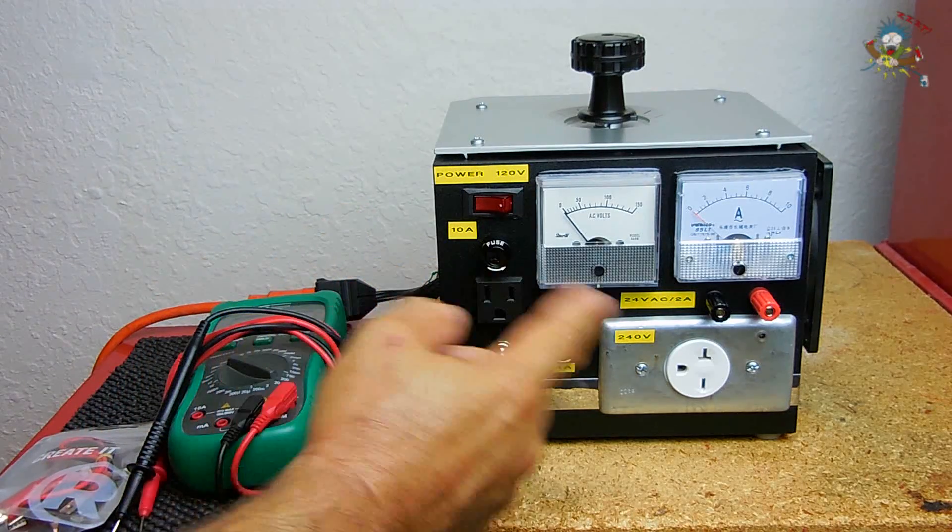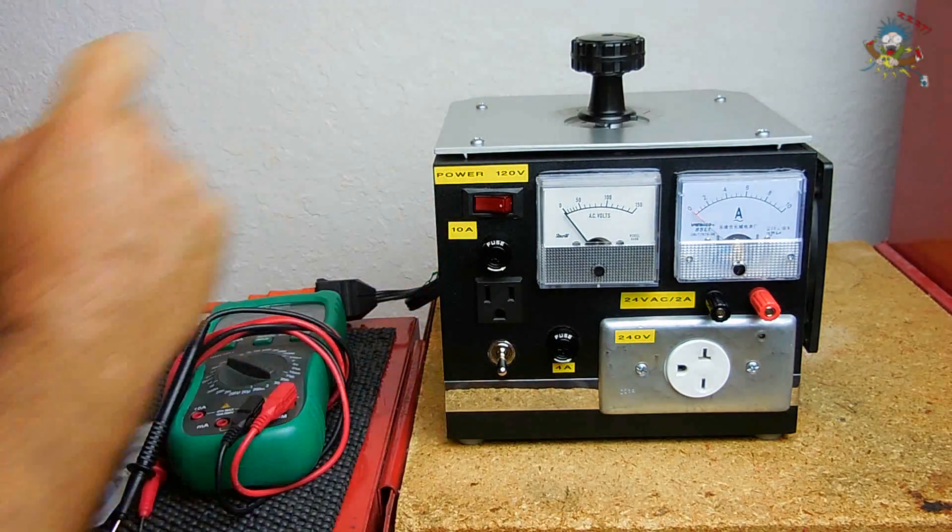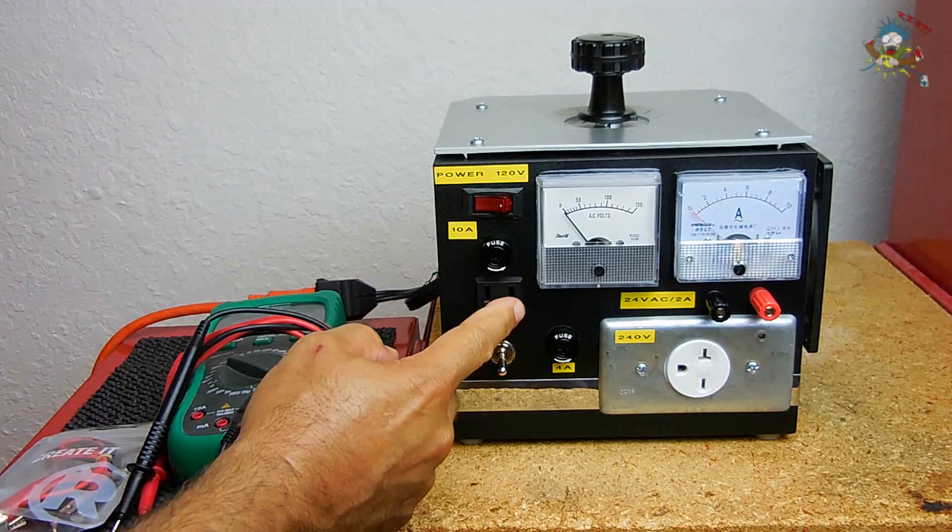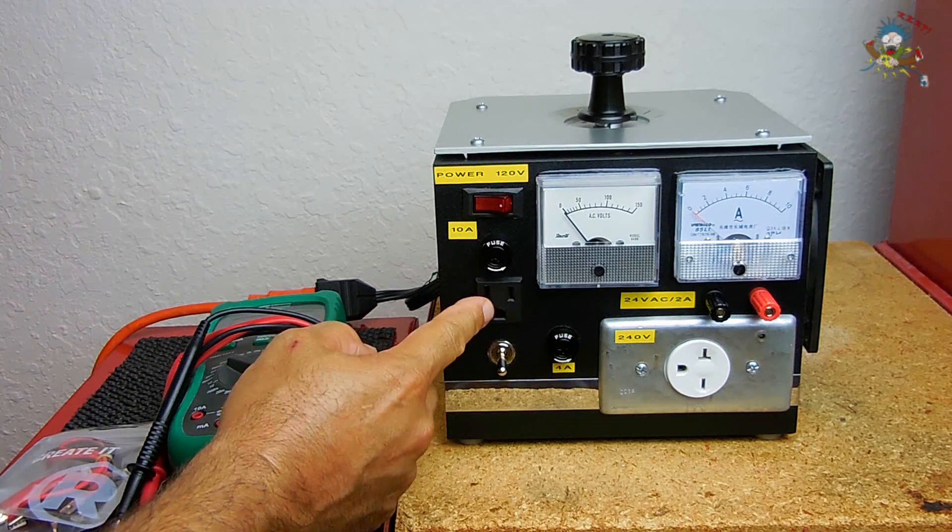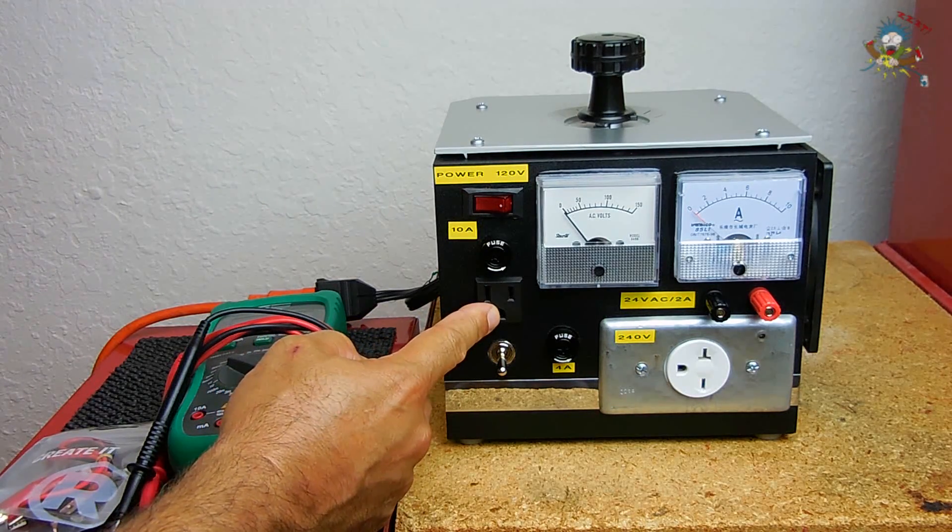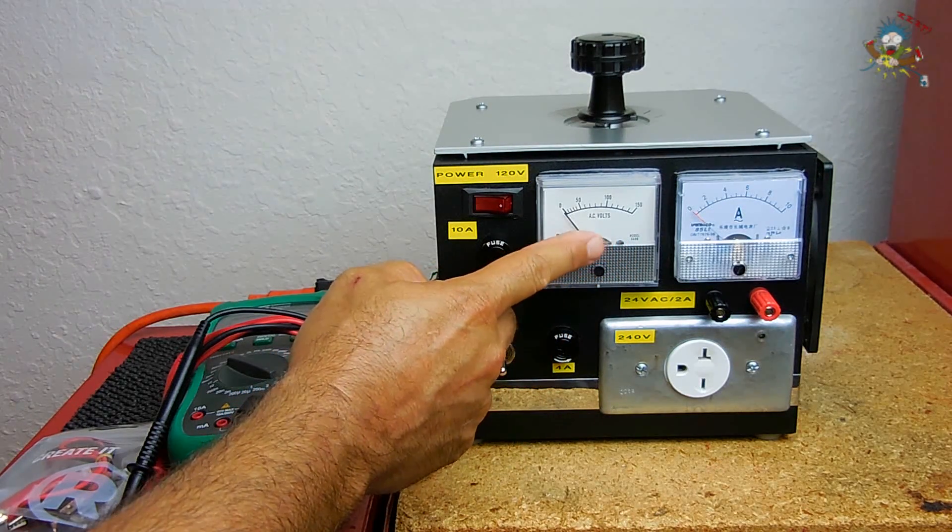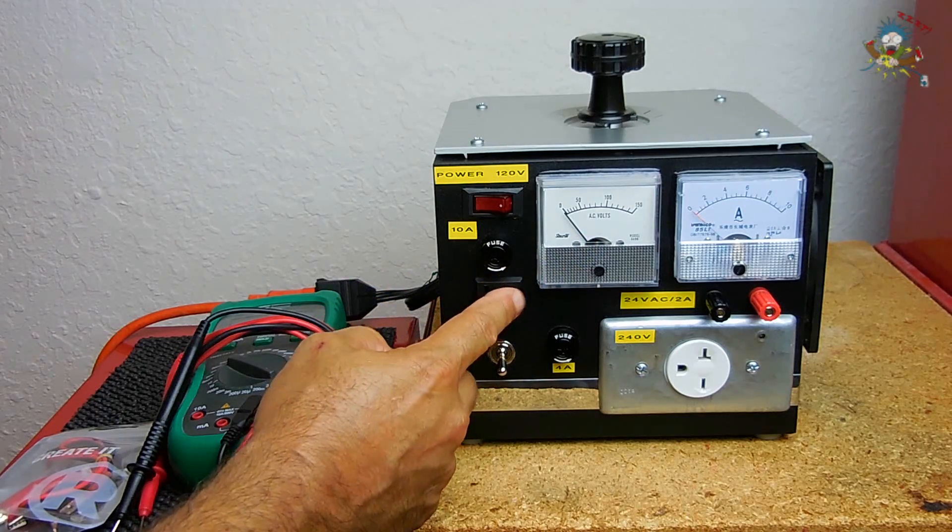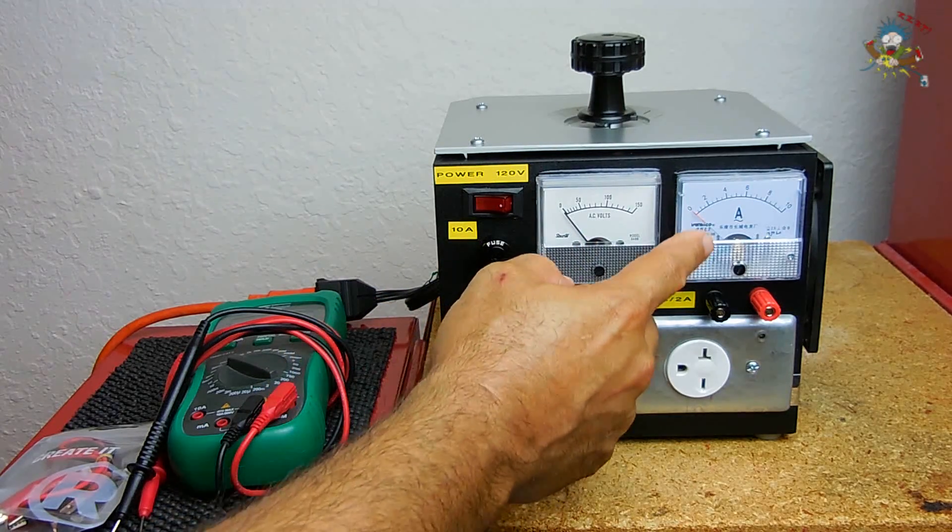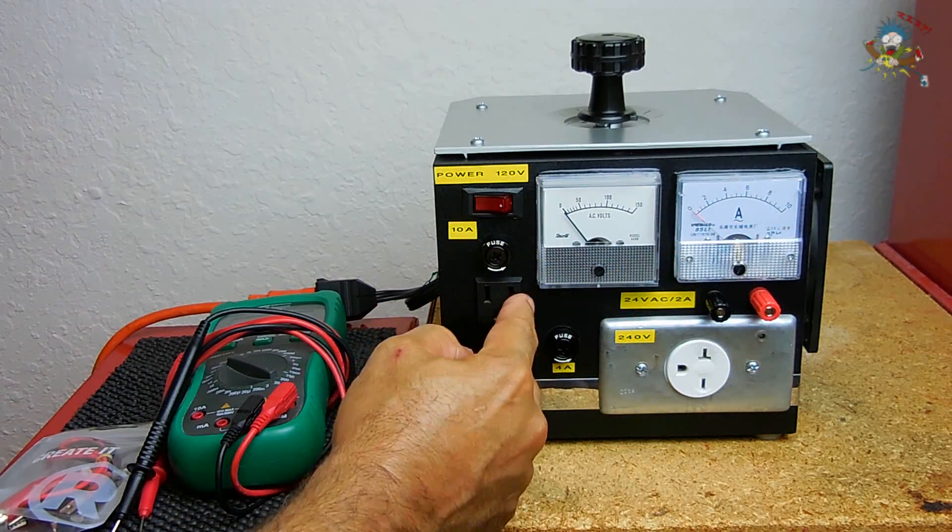As you rotate the control on top, you can vary the amount of current flowing out of this receptacle at 120 volts. You're going to see the actual voltage reading displayed on this analog meter which is across the receptacle, and you're going to see how much current is flowing through the device that you have plugged in.